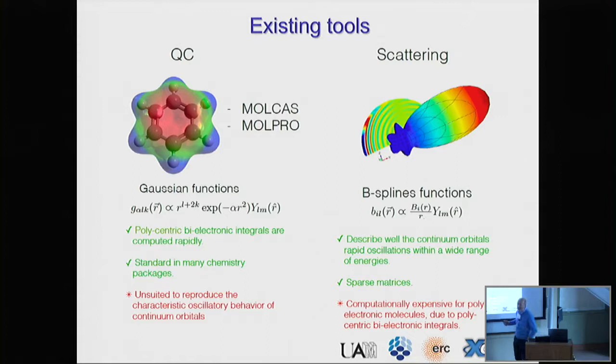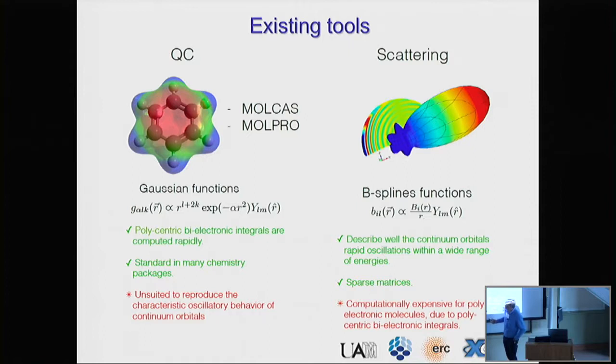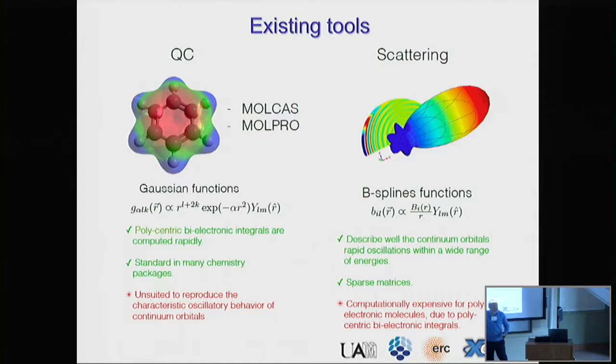What we did is to take what is good from both sides — from the quantum chemistry world and from the scattering world — and combine them. In quantum chemistry, packages such as Molpro make use of Gaussian functions to describe the electronic wave function. This is very convenient because it allows for a very efficient and rapid evaluation of two-electron integrals, which are the relevant ones to describe electron correlation, and they are standard in all quantum chemistry packages. However, these functions are very unsuited to reproduce oscillations of continuum states and cannot give us the correct asymptotic behavior of continuum states.